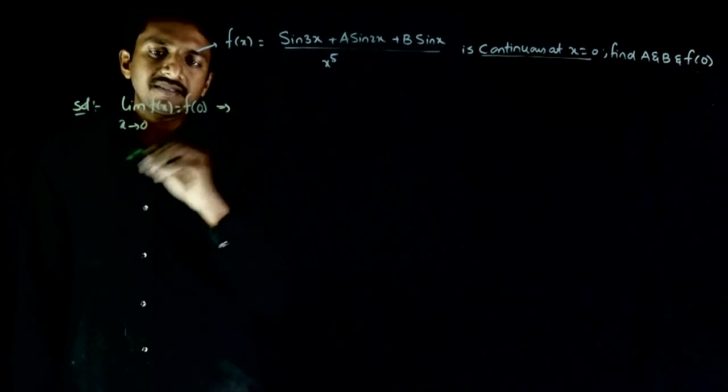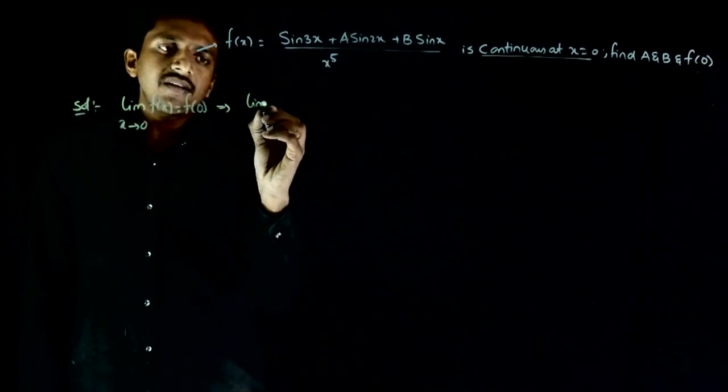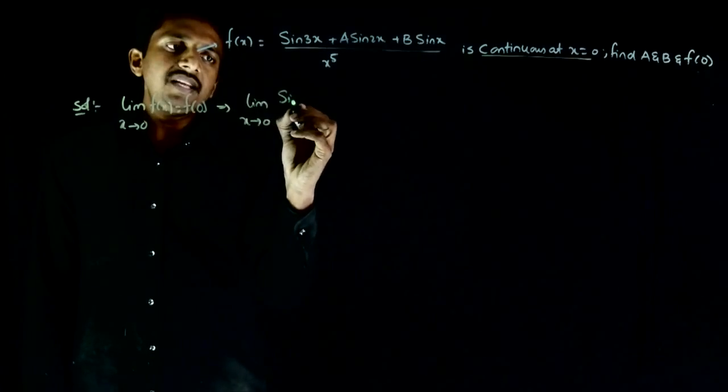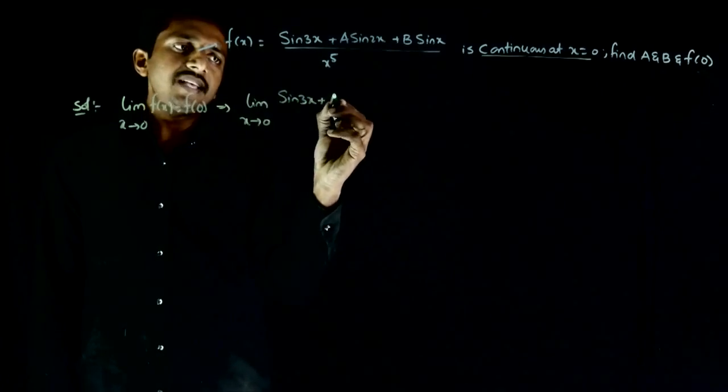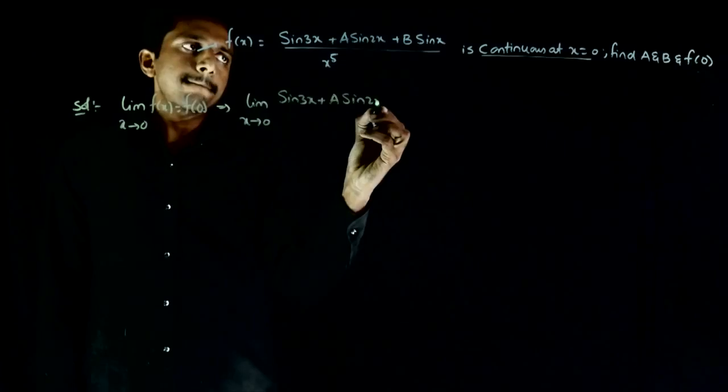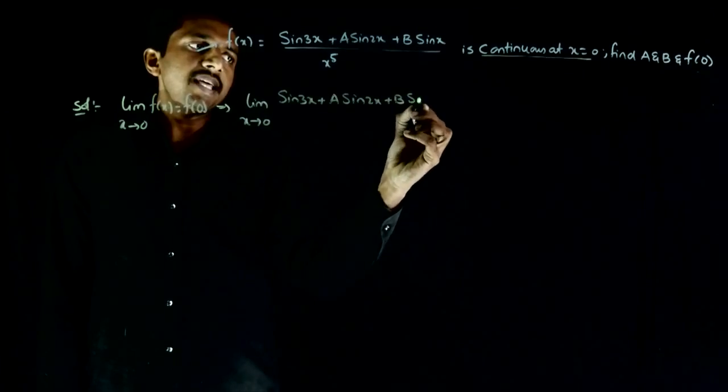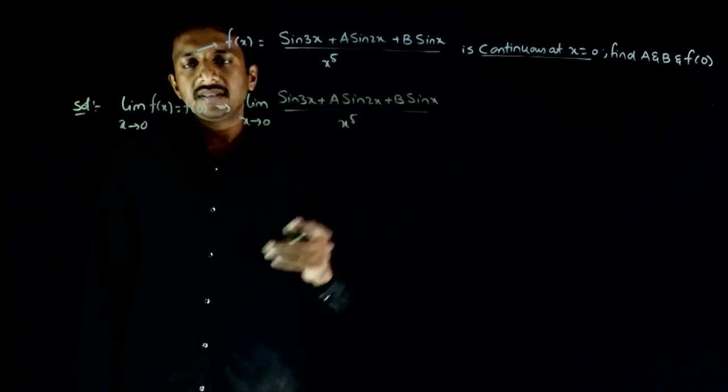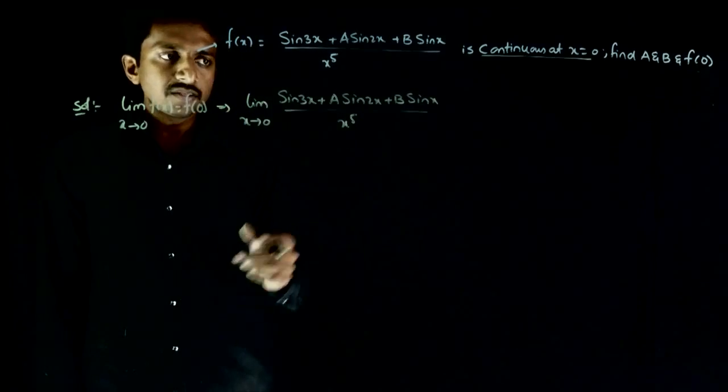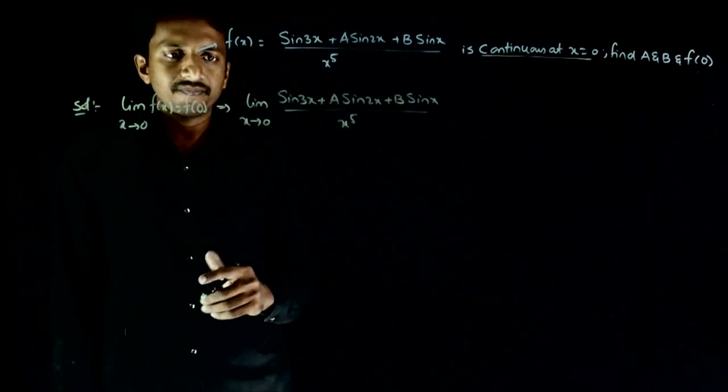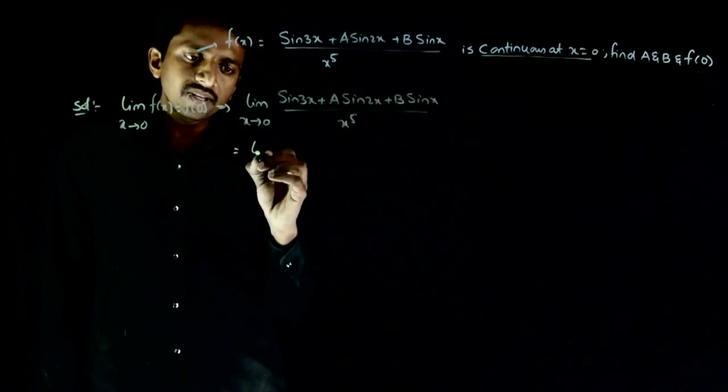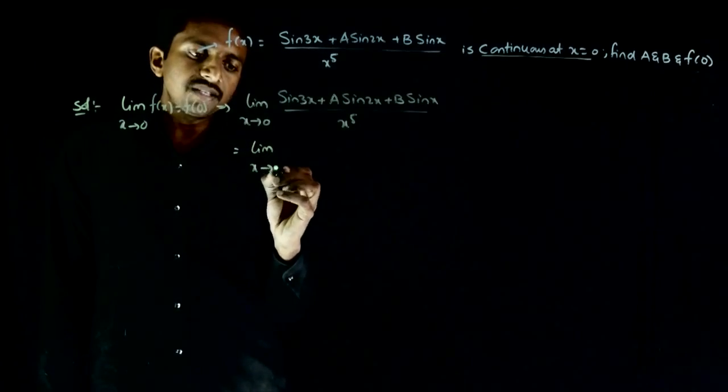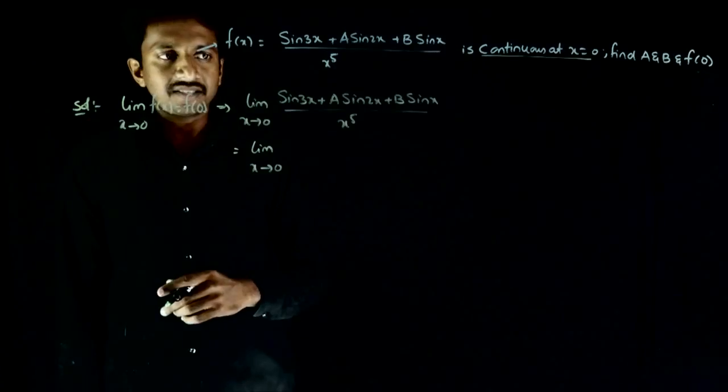This implies limit x tends to 0 of sin 3x plus a sin 2x plus b sin x divided by x power 5 is equal to f(0). First let us try to find this limit. Limit x tends to 0.